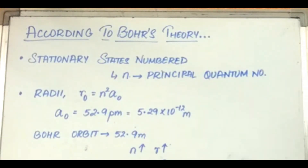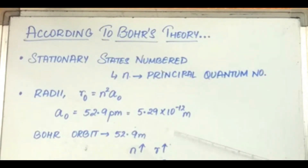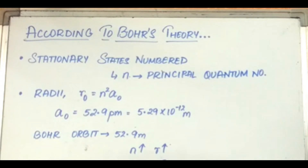The radius of the first stationary state is called the Bohr orbit, which is equal to 52.9 picometres. The electron in the hydrogen atom is found in the first orbit where n equal to 1. As the value of n increases, the value of the radius increases and the electron is present farther away from the nucleus.